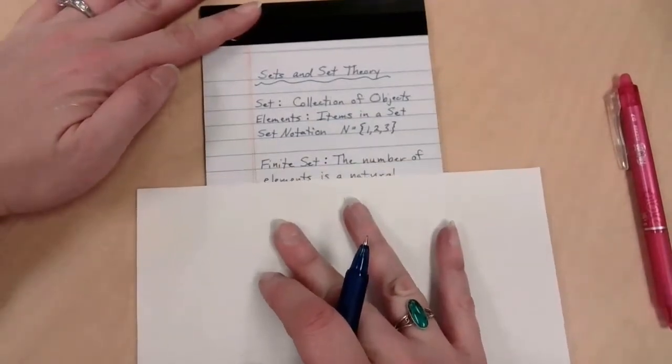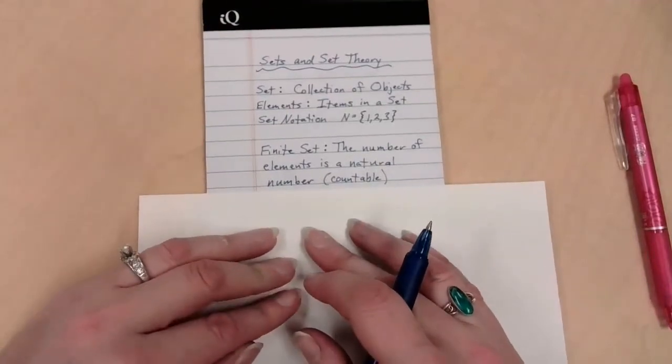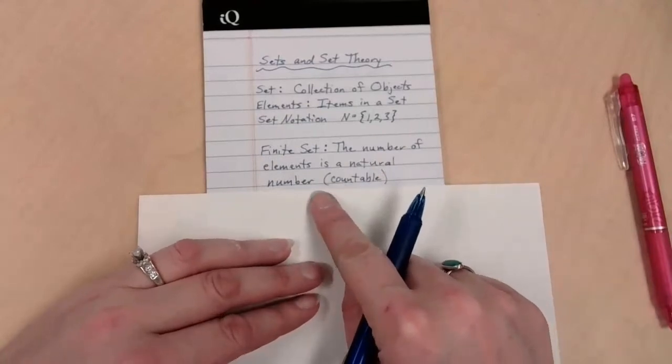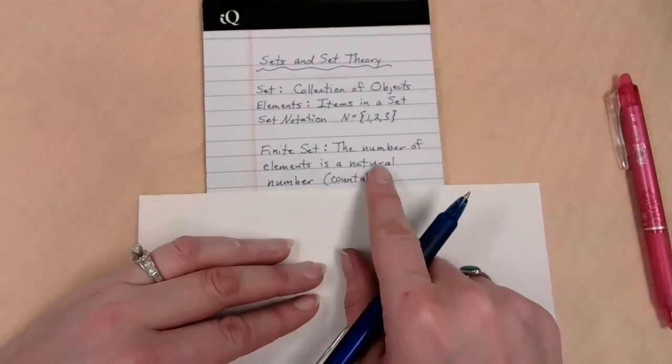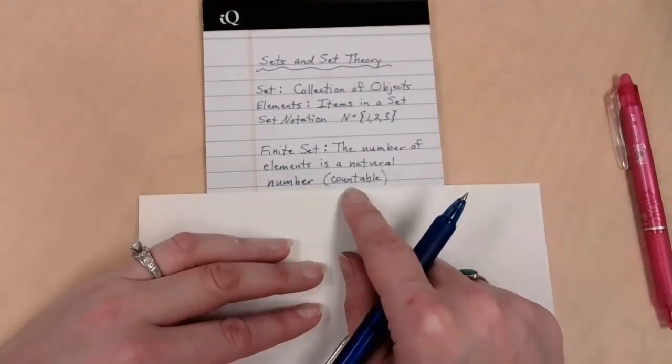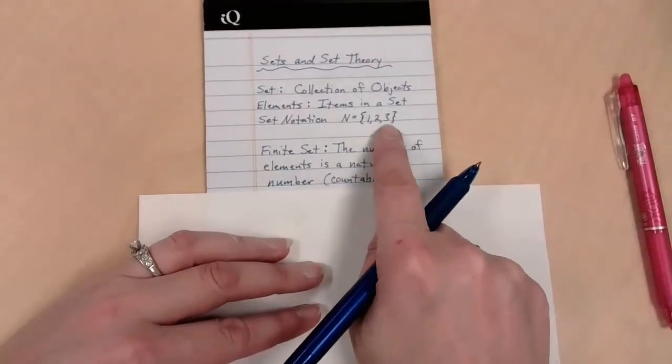Finite set. There are two types of sets. The first one is finite. Finite is the number of elements in the set. It's a natural number. Your natural numbers are your counting numbers. In other words, if I can count how many numbers are in the set, it's a finite set. This set has three elements. It is finite.